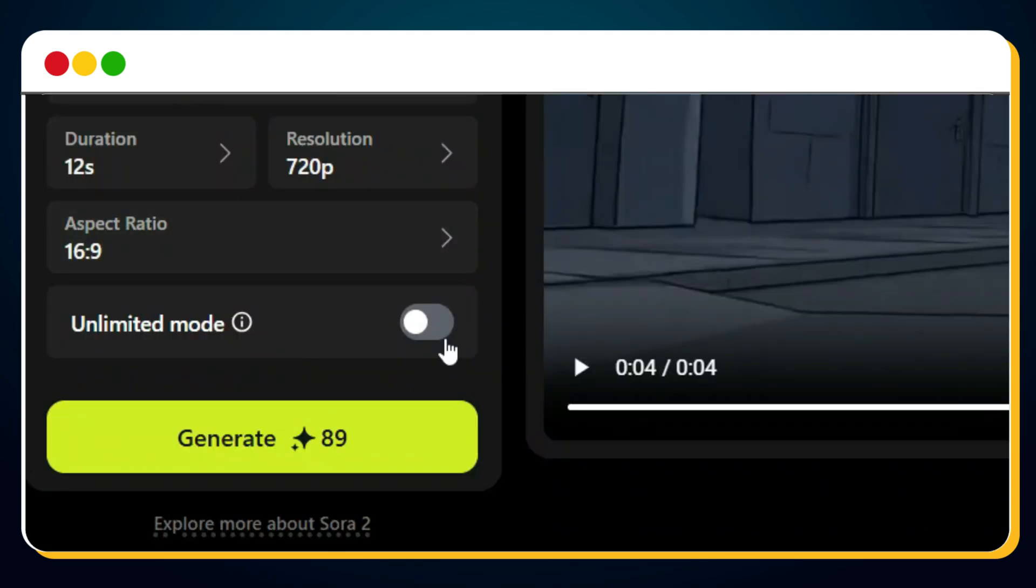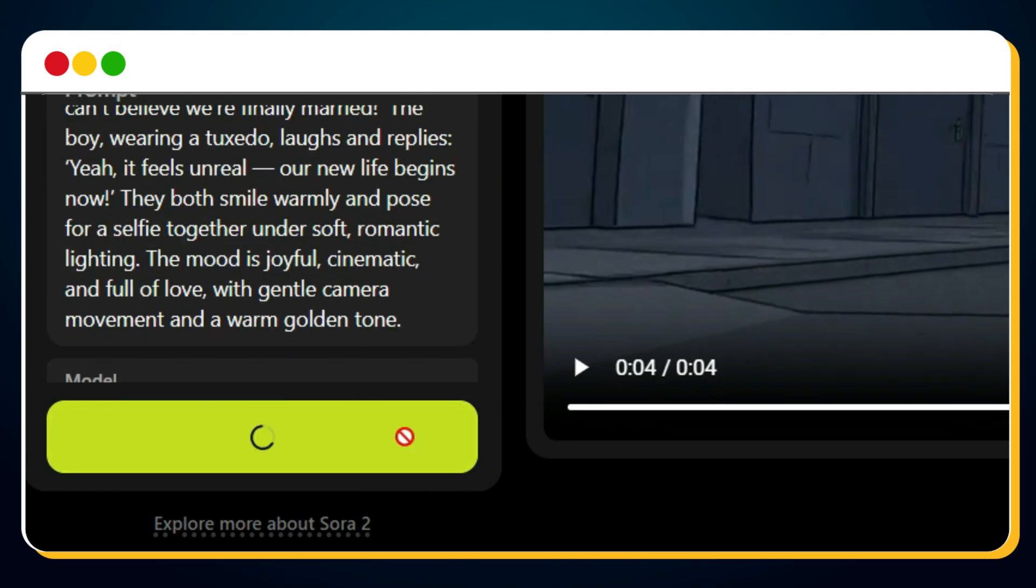And here's the real game changer, the Unlimited Mode. If you're on the Higgsfield paid plan, you will see this unlimited option which you can toggle to generate unlimited videos without spending a single credit. That means no more worrying about limits, no tokens, no extra cost, just create as much as your imagination allows. Now hit generate, and within seconds your new clip will be ready.